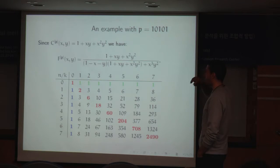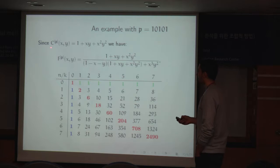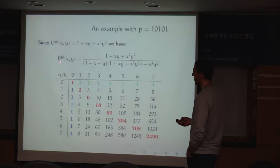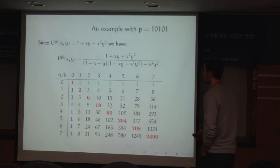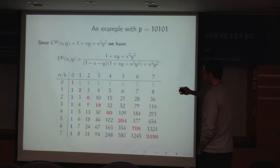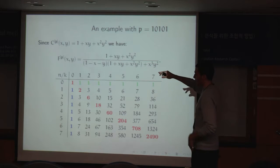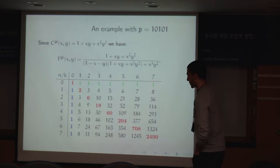Continuing the example for the pattern 10101, we define the autocorrelation polynomial to write the explicit definition for the bivariate generating function f. The full entry matrix is simply the complete expansion of this bivariate generating function.